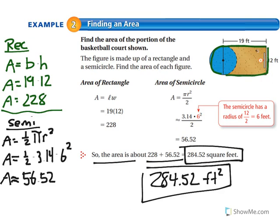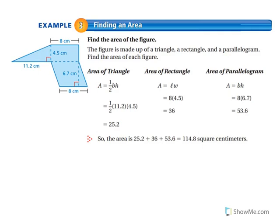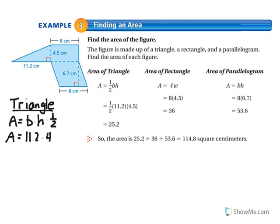Here's our next example. I see three different areas: a triangle, a rectangle, and a parallelogram. For the triangle: area equals one-half times base times height. You have to look for the right angle. With base 11.2 and height 4.5, I get one-half times 11.2 times 4.5, which equals 25.2.